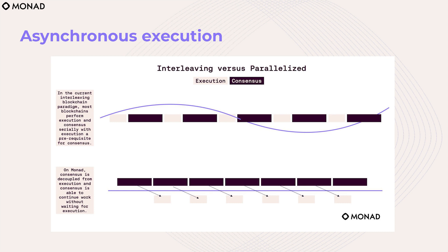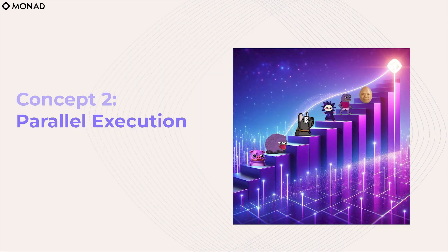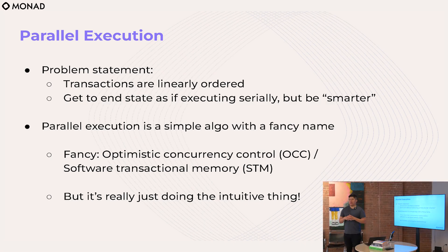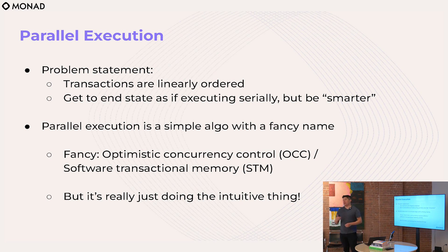The key concept is that at Monad we move execution out of the hot path into a separate swim lane. So, number two: parallel execution. I want everyone to think of execution as a black box that gets to the end state after executing a list of transactions defined in a linear order. Instead of doing them serially — which is how Ethereum and other blockchains work right now — we should strategically try to do work in parallel. The job of execution is to get to that end state as if we ran these transactions one after another.